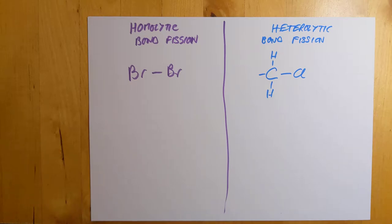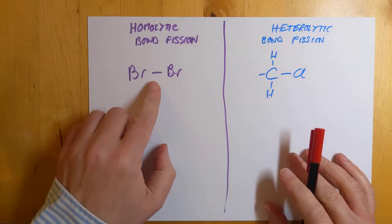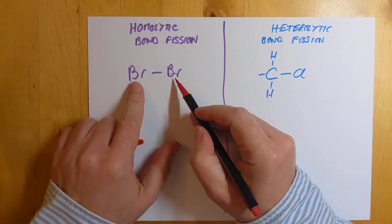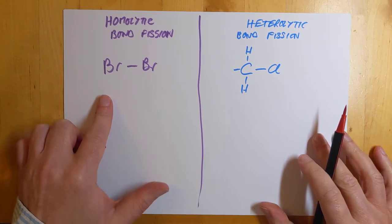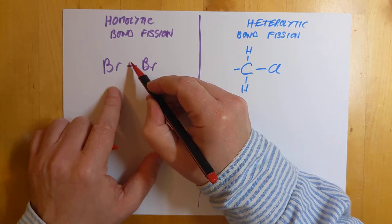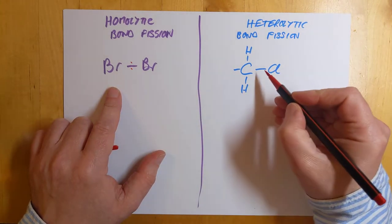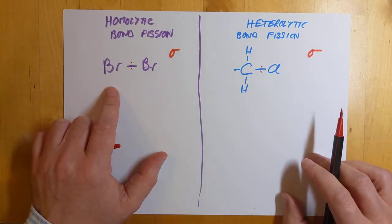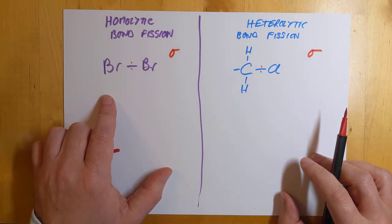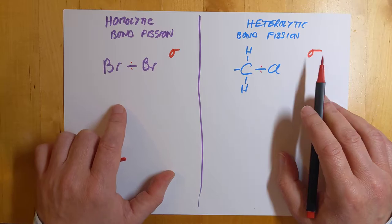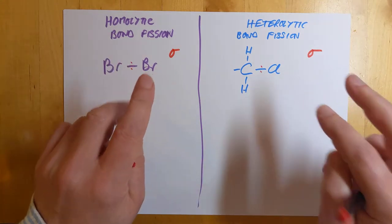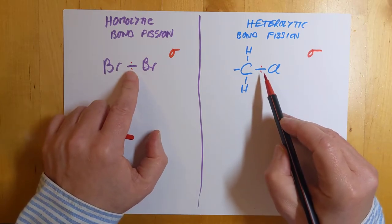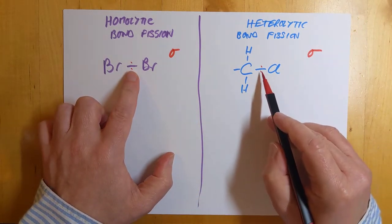Right, let's have a look at both these guys. Definitions first. Homolytic bond fission is very simply the fact that when we split this bond here, this bond is completely non-polar because these are both identical electronegativities. So there is a pair of electrons in this bond and there is a pair of electrons in this bond. Technically speaking, these are sigma bonds. These are standard, normal single bonds.